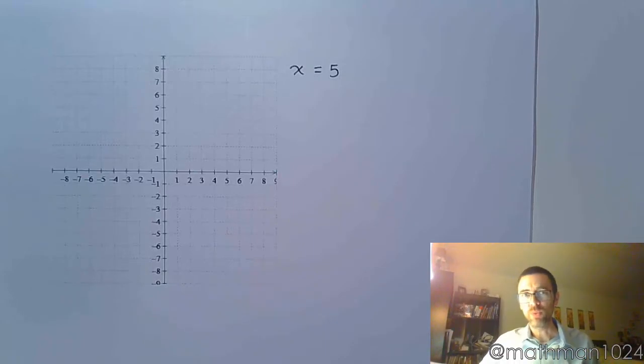In the last example, we saw what happened when we just had y and we didn't have any x. So let's flip that around. What if you just have x in your equation and no y?